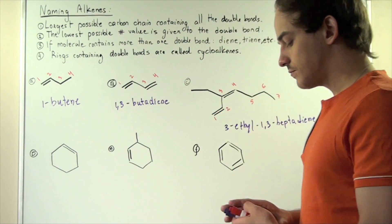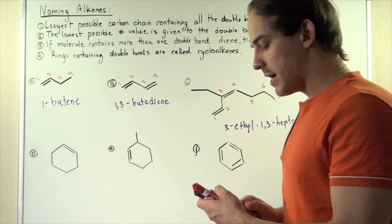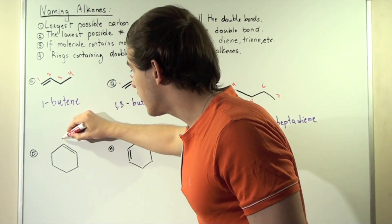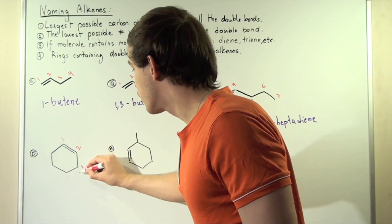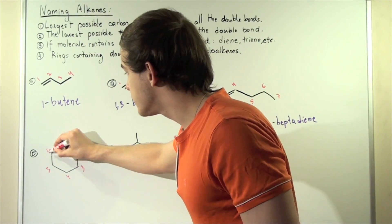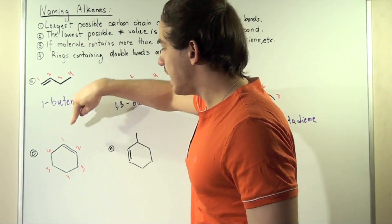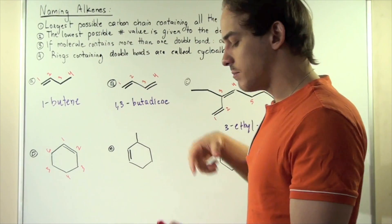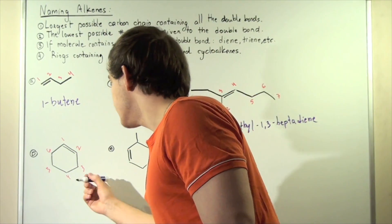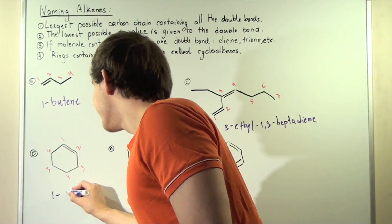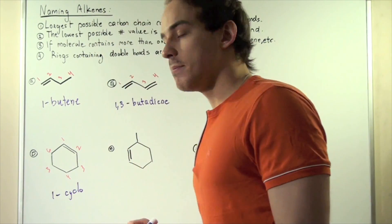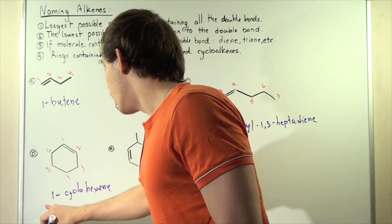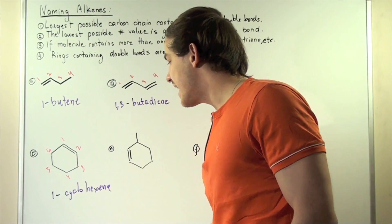Compound D is a ring compound — a ring structure. We begin labeling on the carbon at the double bond: one, two, three, four, five, six. We begin numbering on the double bond so it gets the lowest possible number value. This compound is known as 1-cyclohexene, or simply cyclohexene — 'cyclo' because it's a cyclic compound and 'hex' because we have six carbons.